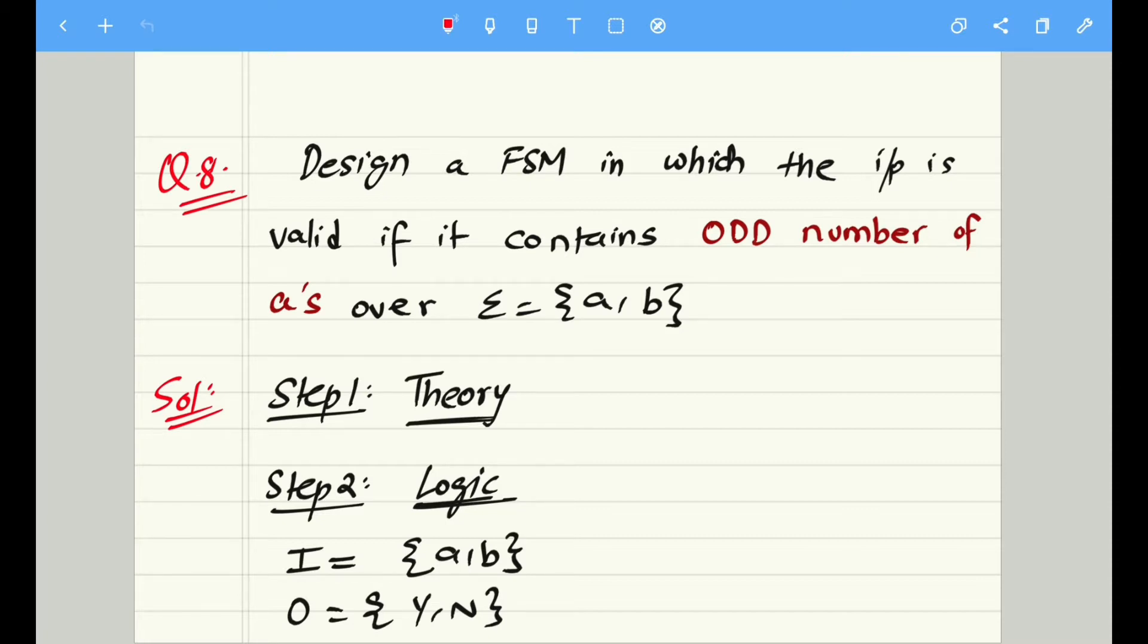So let's get started with this problem in front of us: Design a finite state machine in which the input is valid if it contains odd number of a's. The question is very simple. The inputs are in the form of a, b and we would accept the input if it contains odd number of a's. The only condition here is the number of a's in the input should be odd. We are not bothered about the number of b's in this case.